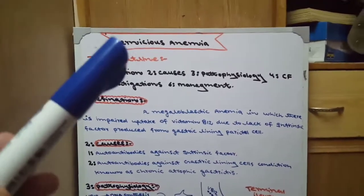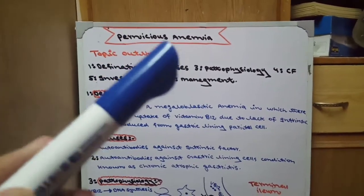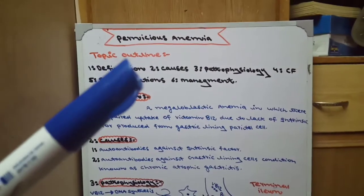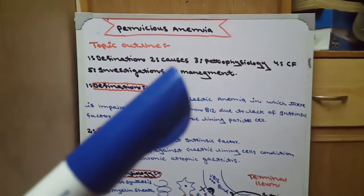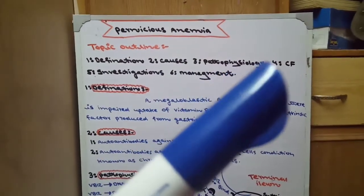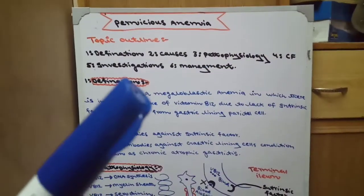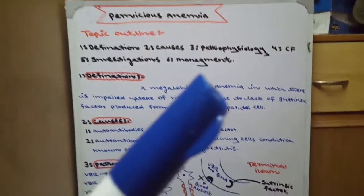Today we will talk about pernicious anemia. The topic outline is: first of all we will talk about pernicious anemia, then its causes, then its pathophysiology, then clinical features, then investigations, and then management.